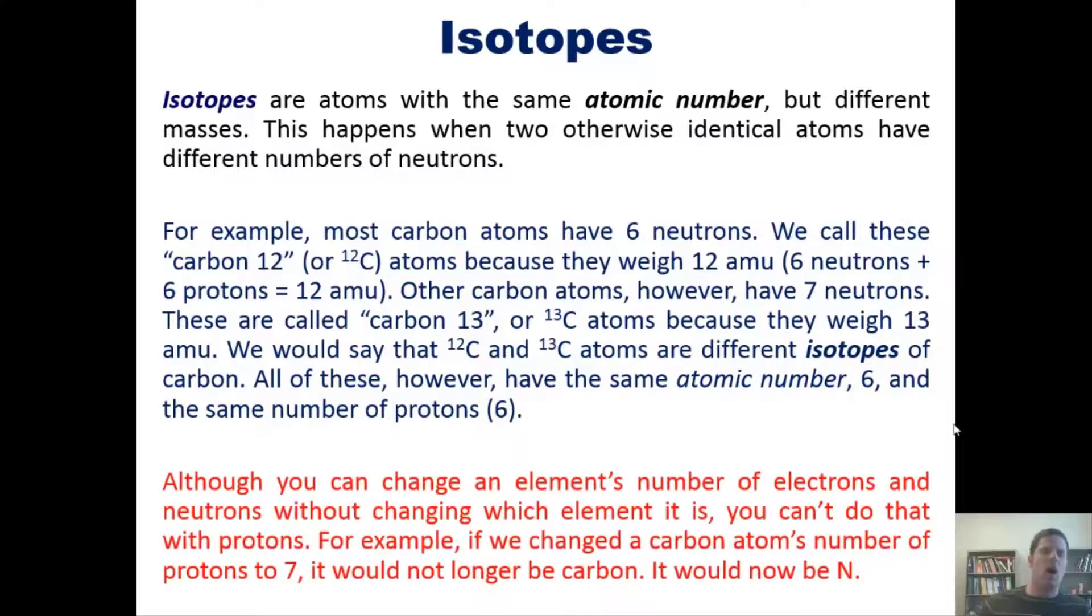Once again, although you can change an element's number of electrons and neutrons without changing which element it is, you cannot do that for protons. For example, if we changed a carbon atom's number of protons to 7, it would no longer be carbon, it would now be nitrogen. That takes us to some review problems from chapter 2. I realize that right now we're in chapter 21, so this is totally a review, but I hope you'll take it seriously and make sure you know how to do it.